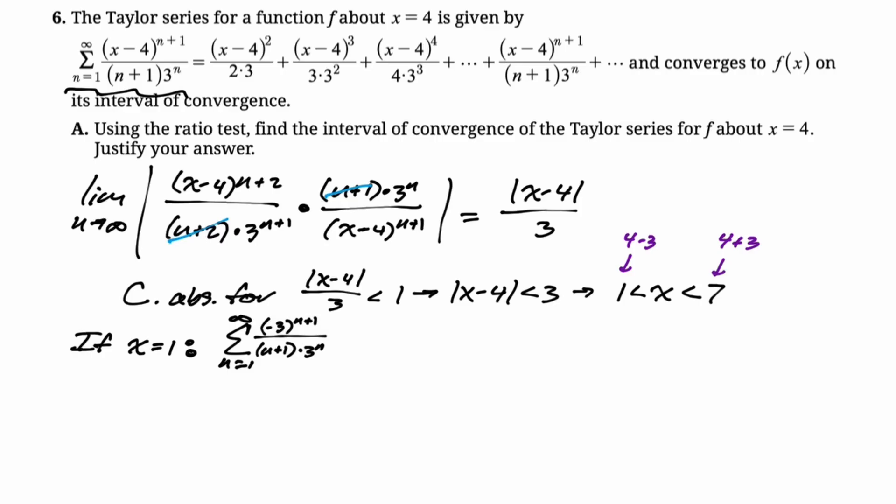So negative 3 to the n plus 1 is negative 3 to the n times negative 3 to the first. So in that case, we can simplify because the negative 3 to the first stays. Negative 3 to the n divided by 3 to the n is negative 1 to the n and then over n plus 1. I don't know how much work we really need to show here because it just says justify.